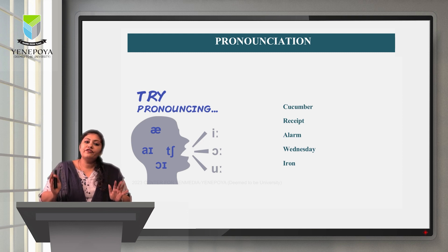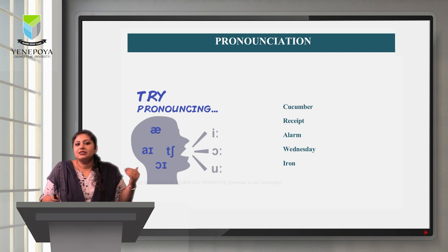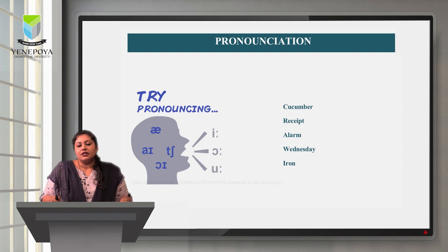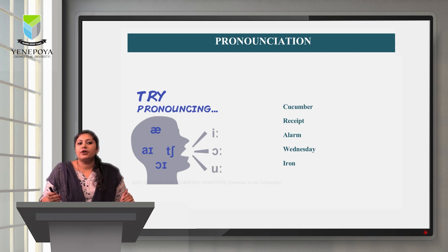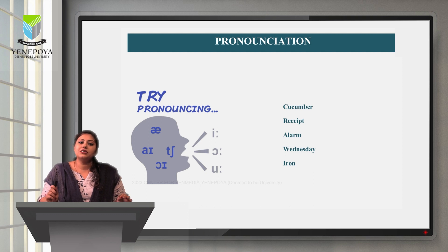Here are practice words on the screen. The first word is C-U-C-U-M-B-E-R. Try pronouncing it before the answer. Many people pronounce it as 'cucumber' — but the correct pronunciation is 'cucumber.' Whether American or British pronunciation, it is never 'cucumber.' The second word is R-E-C-E-I-P-T. Most of us say 'received' but the correct pronunciation is 'receipt,' where the P is silent.